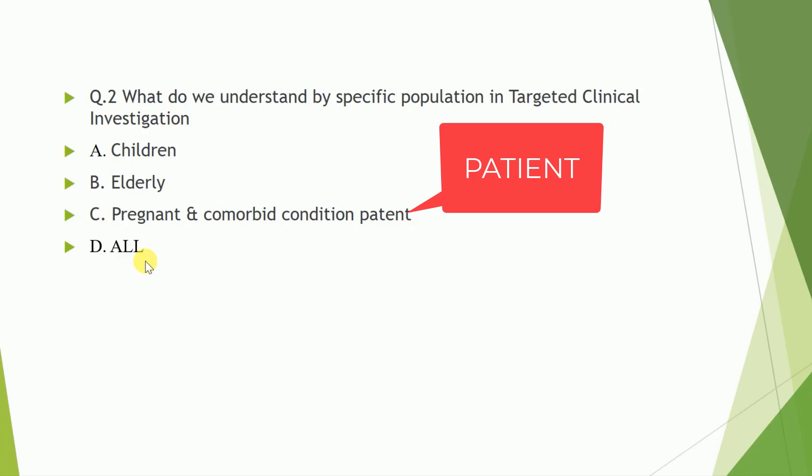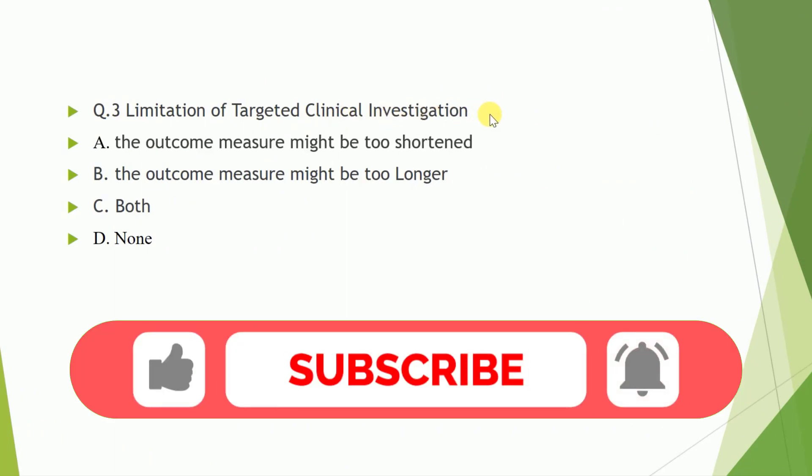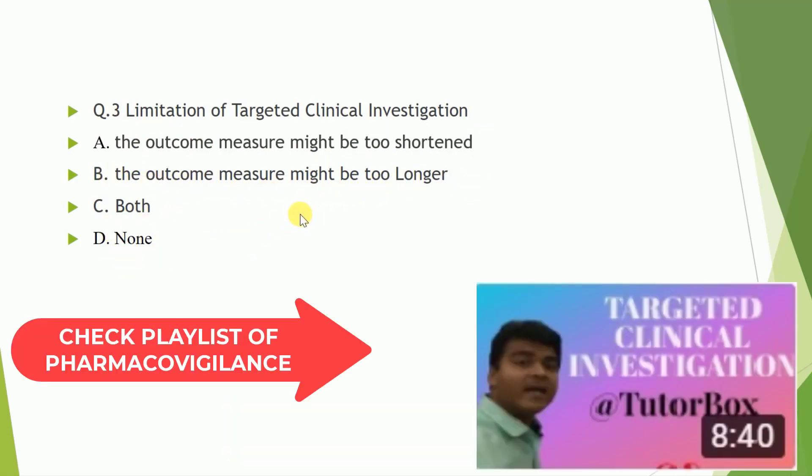Question number three: limitation of targeted clinical investigation. A the outcome measure might be too shortened, B the outcome measure might be too longer, C both of these, and D none of these. So correct answer is A, the outcome measure might be too shortened.